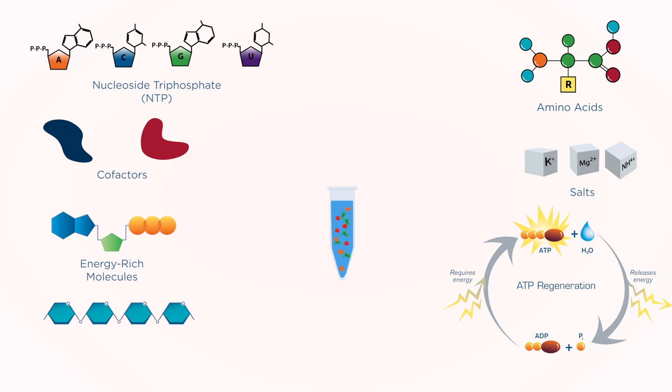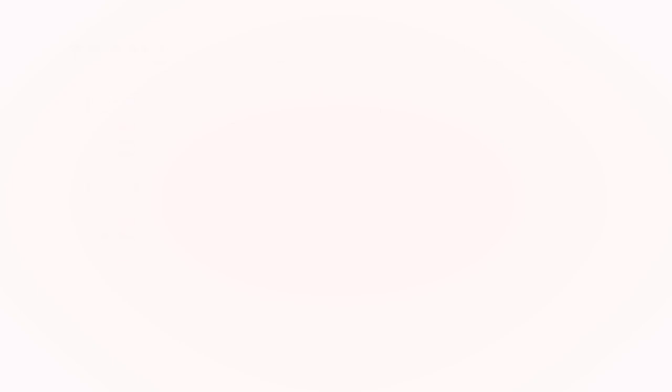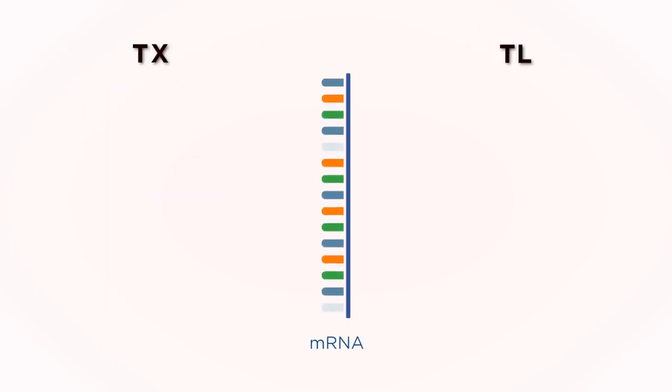Also, energy-rich molecules and an ATP regeneration system are needed before the components can begin churning out protein. Cell-free transcription translation, or TXTL, makes protein production much faster.